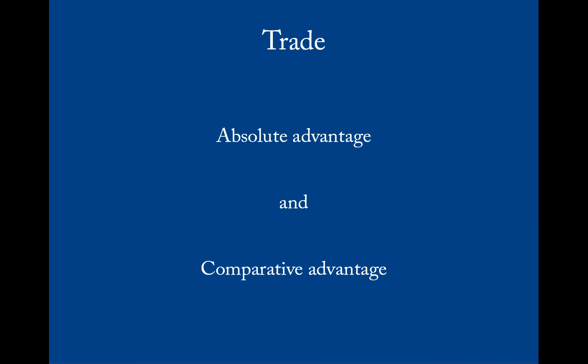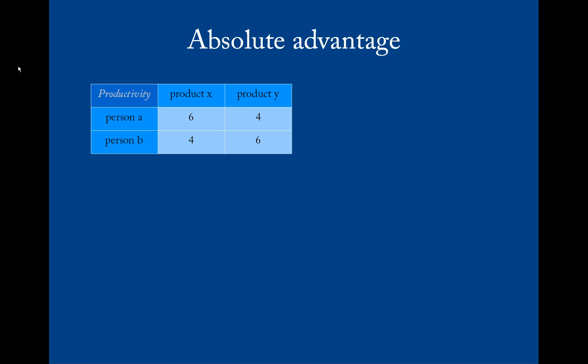Trade - why do people trade at all? To answer this question I will talk about absolute advantage and comparative advantage. Imagine there are two people, person A and person B. They produce product X and product Y at different ratios. One person is faster at producing product X, the other person is faster at producing product Y.